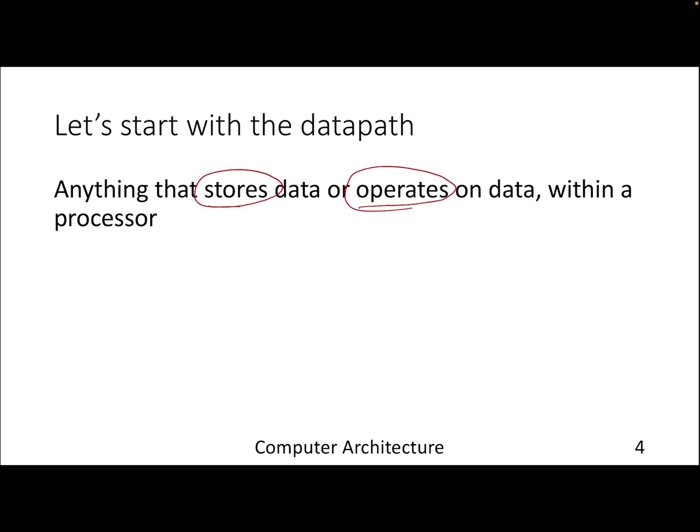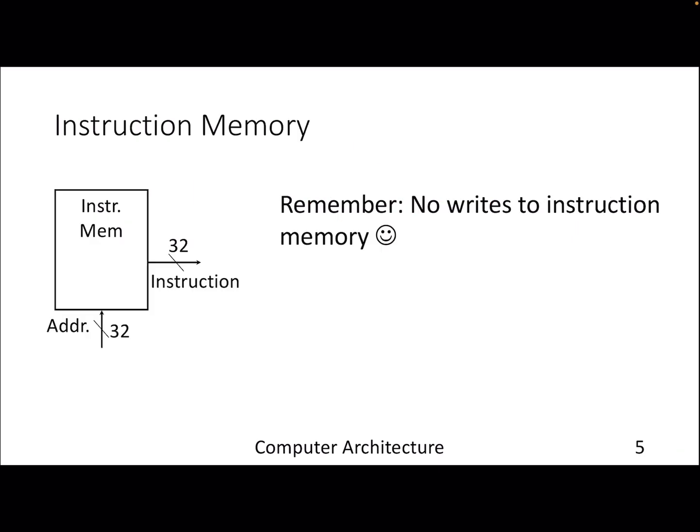We'll look at each and every unit inside a processor that either stores data or operates on data. The first is instruction memory. Because we're dealing with the von Neumann model, our instructions are stored in memory. If you provide an address, it will give you the instruction — and that address is the content of the program counter. You provide the address specified by the program counter, and in return you get a 32-bit instruction that the processor will later decode and execute.